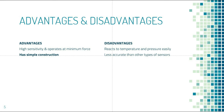The disadvantages are: first, it reacts to temperature and pressure easily. While only a small amount of pressure is needed, too much pressure may damage the device or prevent it from detecting displacement. It is also sensitive to increases in temperature because it is made of electrical circuits. Second, it is less accurate than other types of sensors, which may offer more precise detection.